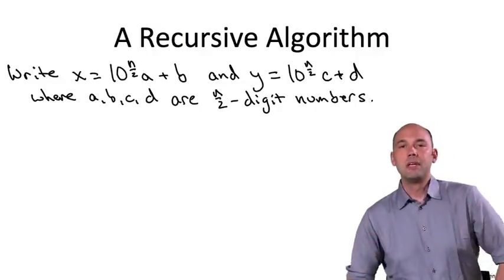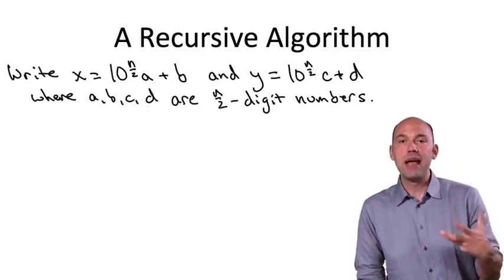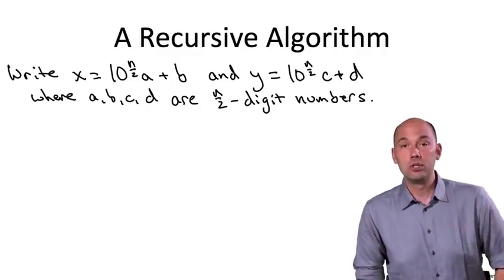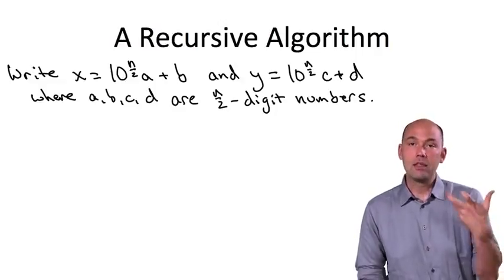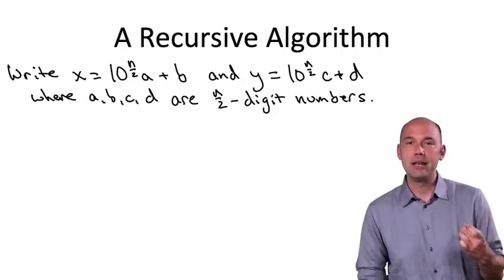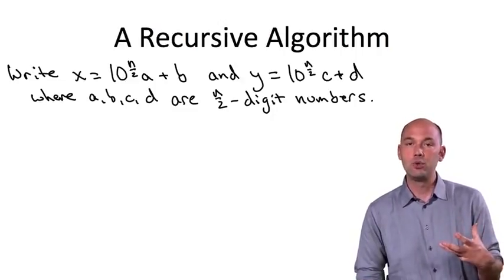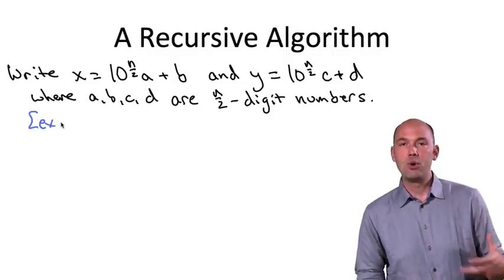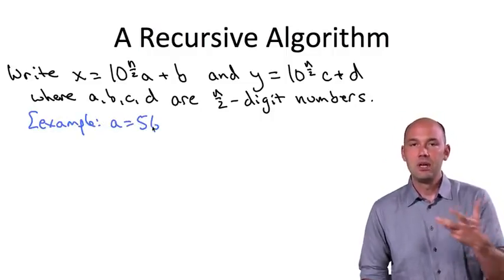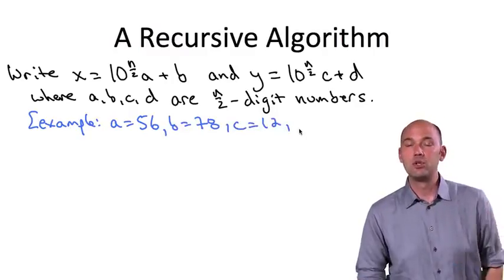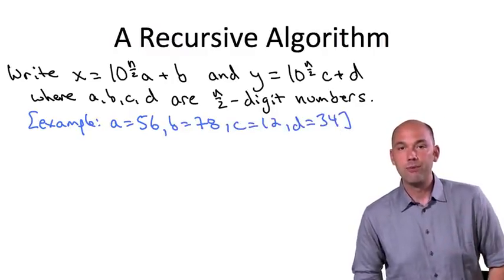In general, given a number x with n digits, it can be expressed, decomposed, in terms of two n over two digit numbers. Namely, as a, the first half of the digits shifted appropriately, that is, multiplied by 10 raised to the power n over 2, plus the second half of the digits, b. In our example, we had a equal to 56, 78 was b, n was 4, so 10 to the n over 2 was 100, and then c and d were 12 and 34.